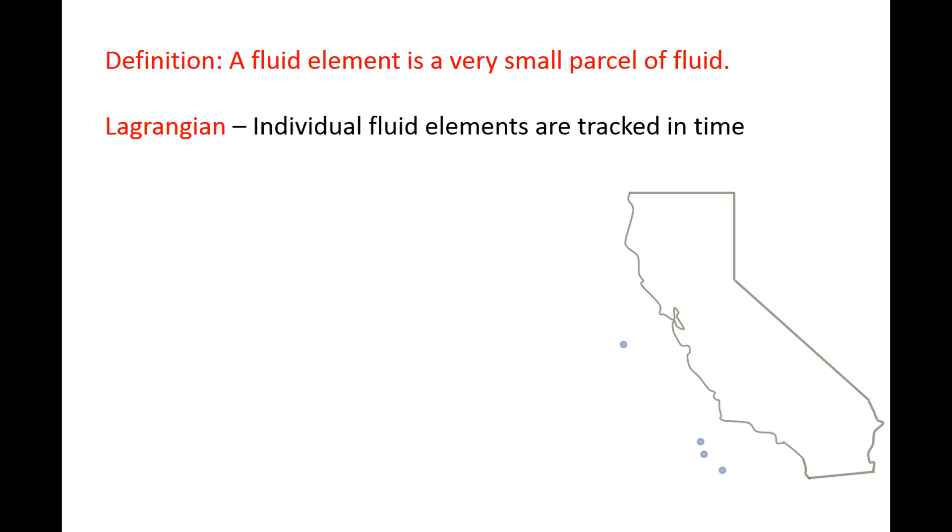Here we have four fluid elements off the west coast of California. In the Lagrangian viewpoint, the equations of motion of these four fluid elements are well known from dynamics, simply f equals ma.